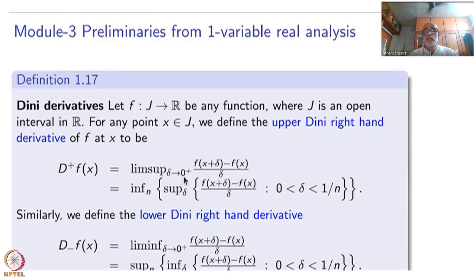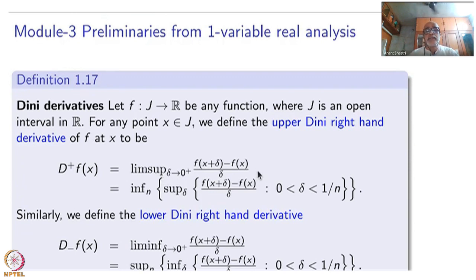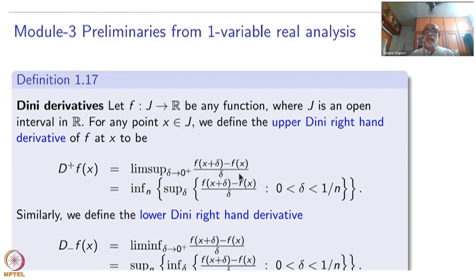Here δ tends to 0+, so only positive δ are taken. You are not taking the limit, which may not exist, but rather the lim sup. The whole idea is that lim sup always exists no matter what the function is — if you allow infinity, this always exists. If it is a bounded function, it will be finite.